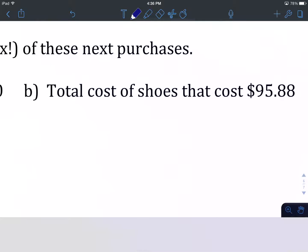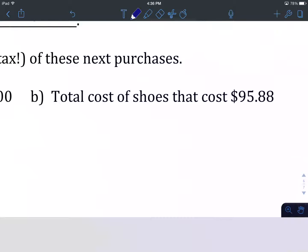Let's try B. I'm going to get you to hit pause and try this one on your own. We're after a set of shoes that cost $95.88. When you think you know the total cost of the shoes with tax, come on back. We'll see how you did.